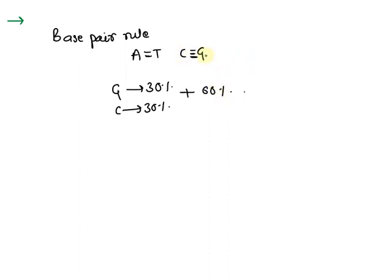...which means that 40% will be adenine plus thymine. So individually, adenine will be 20% and thymine will be 20%.